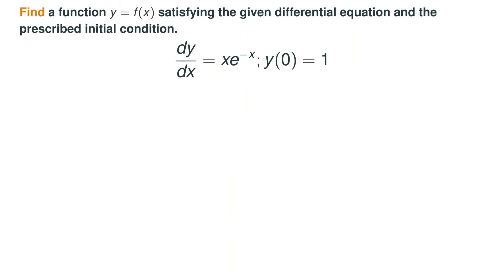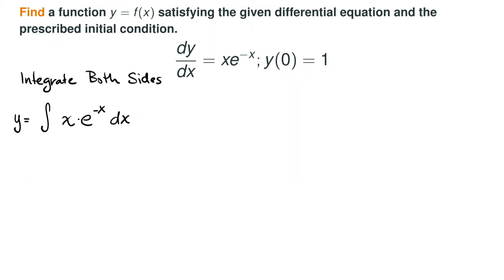In this next problem, we are again asked to solve a differential equation with an initial condition. We begin by integrating both sides. Integrating the left side gives us y, and then we need to determine how to integrate x times e to the negative x with respect to x. I'd encourage you to think through your integration techniques to figure out what method would allow us to integrate the right side. Integration by parts will be useful here.